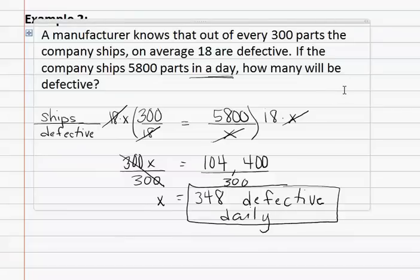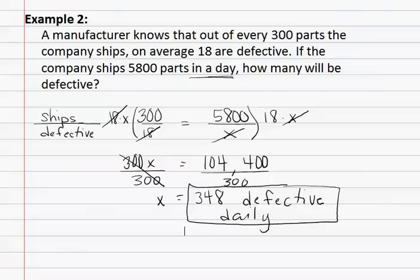Remember, when doing proportion applications, you must first identify what you are comparing, such as ships versus defective or height versus shadow, and then clearly label these as numerators and denominators of the proportion.